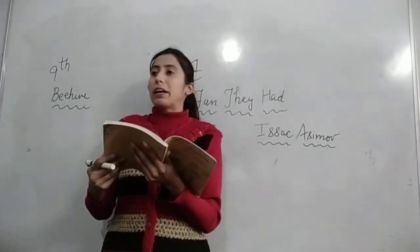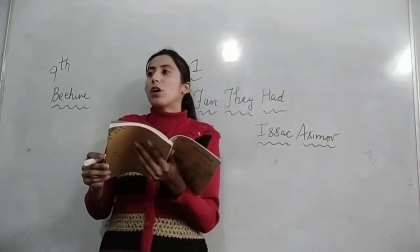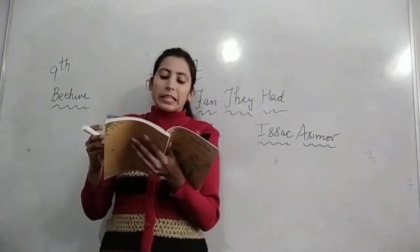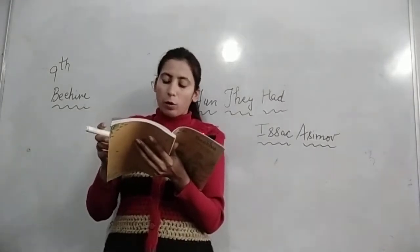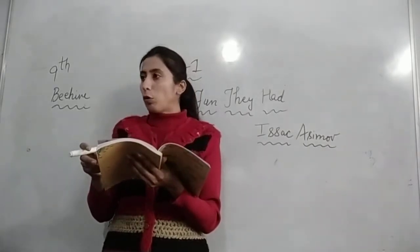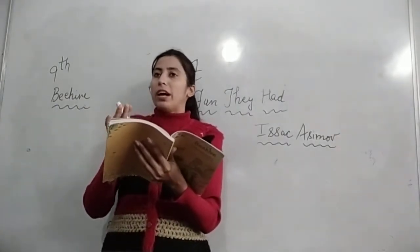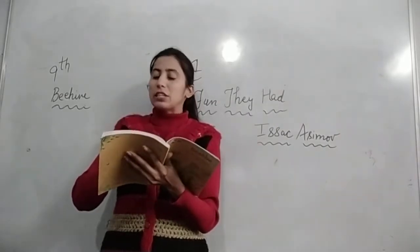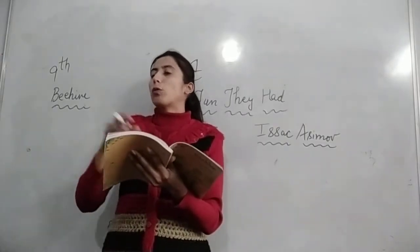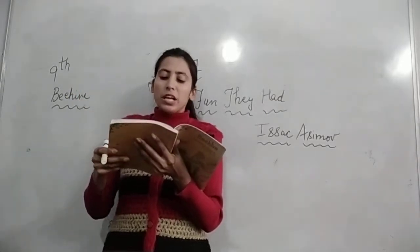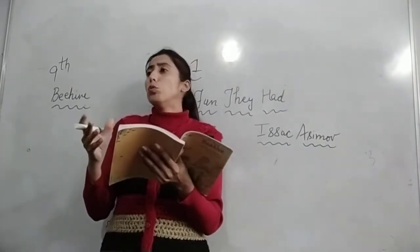Margie was disappointed. She had been hoping they would take the teacher away altogether. अब Margie मायूस हो गई — उसको लग रहा था कि county inspector आया है तो teacher को भी साथ ले जाएगा. They had once taken Tommy's teacher away for nearly a month because the history sector had blanked out completely. एक बार हुआ था कि Tommy का history sector पूरी तरह blank हो गया था, जिसकी वजह से एक महीने तक उसके history teacher दिखाई नहीं दिए. तो उसे लगा कि जैसे Tommy के teacher गए थे, वैसे ही उसके भी teacher जाएंगे. So she said to Tommy: why wouldn't anyone write about school?